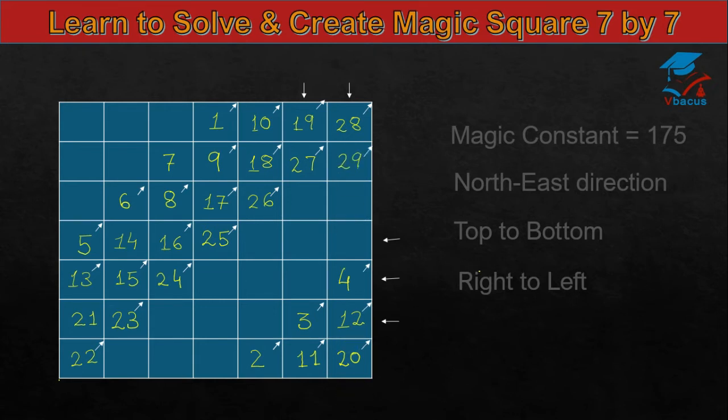No square, go to left, 30. Again, there is no square, come to bottom, write 31. 32, 33, 34, 35, next square is filled, write 36 below 35. North-east direction, 37. Again, there is no square, go to left, 38, north-east direction, 39.